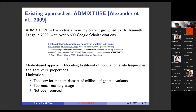The original admixture software was developed by my current group led by Dr. Ken Lange in 2009 and has over 5,000 Google Scholar citations. It is a model-based approach for the likelihood of population allele frequencies and admixture proportions, but had several limitations: it was too slow for large datasets of millions of genetic variants and millions of samples, used too much memory for matrices of size million by million, and is not open-sourced.